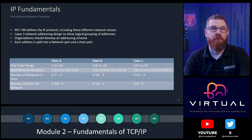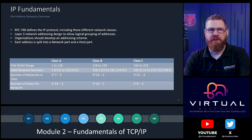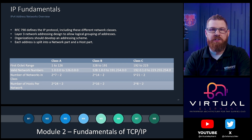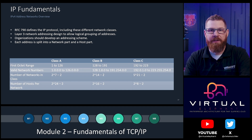There are three main network classes defined in IPv4: Class A, Class B, and Class C. In a Class A address, the first octet ranges from 1 to 126. Class B ranges from 128 to 191, and a Class C address typically goes from 192 to 223. The type of network class determines the number of hosts — as you go from Class A down to Class C, there are fewer addresses available for hosts.